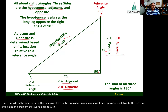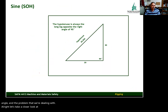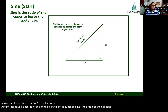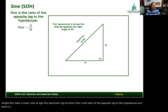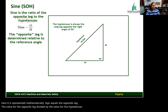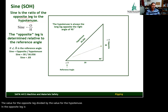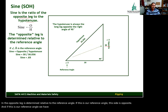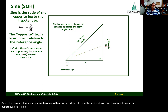Let's take a closer look at sine. Sine is the ratio of the opposite leg to the hypotenuse — mathematically, sine equals the opposite leg divided by the hypotenuse. The opposite leg is determined relative to the reference angle. If this is our reference angle, we calculate sine as opposite over hypotenuse: 30 divided by 36.056, giving a sine value of 0.83. If this other angle is our reference angle, it's 20 divided by 36.056, giving sine of 0.55.